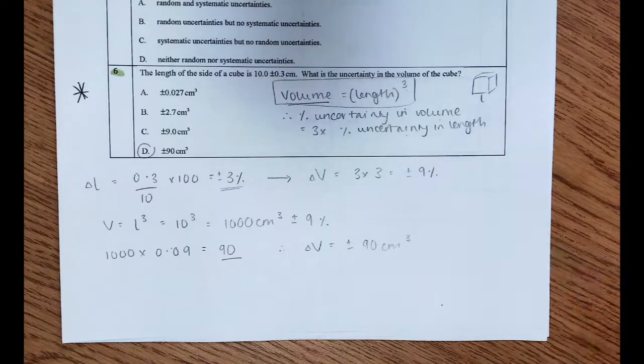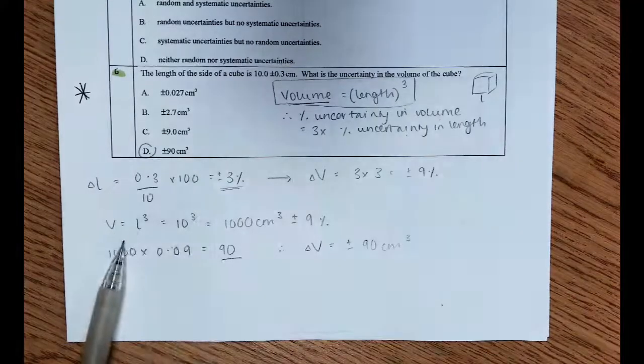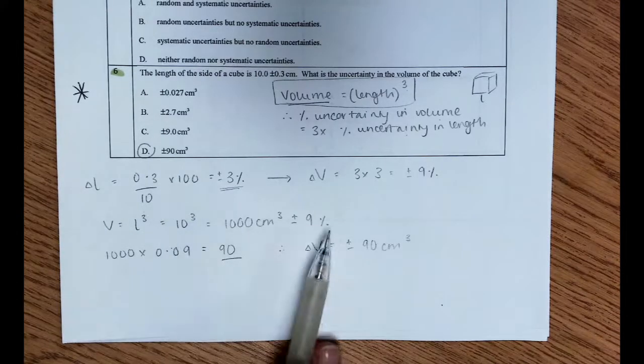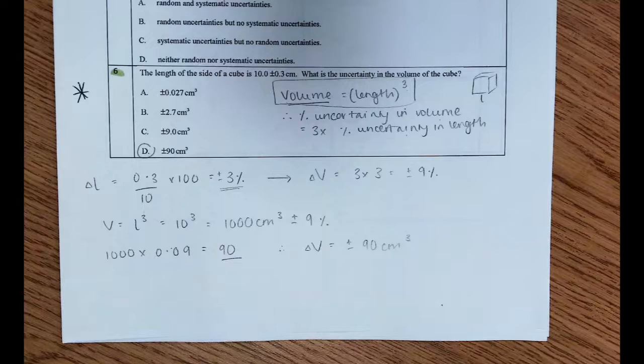So there's a 3% uncertainty in the length, and therefore the volume uncertainty is three lots of that, so it's 9%. And then obviously we need to calculate the actual value. So we do L cubed, we get 1,000 centimeters cubed, plus or minus the 9%, and that works out to be 90%, so you should have chosen plus or minus 90 centimeters cubed for question 6.